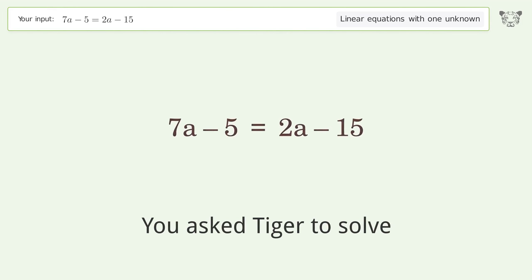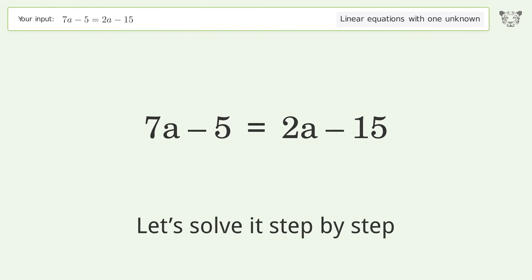You asked Tiger to solve. This deals with linear equations with one unknown. The final result is A equals negative 2. Let's solve it step by step.